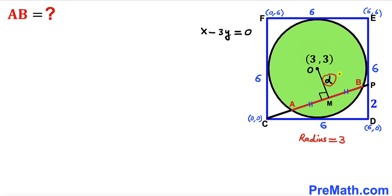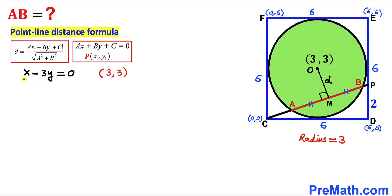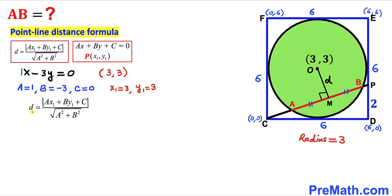I'm going to label this perpendicular OM as lowercase d, where d is the distance between center O and line CP. Recalling the point-to-line distance formula, where the line is ax + by + c = 0 and the point is (x₁, y₁): our line is x − 3y = 0 and our point is (3, 3). So a = 1, b = −3, c = 0, x₁ = 3, and y₁ = 3.